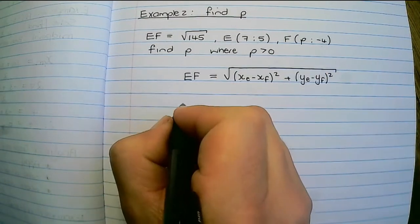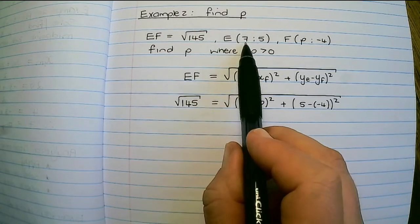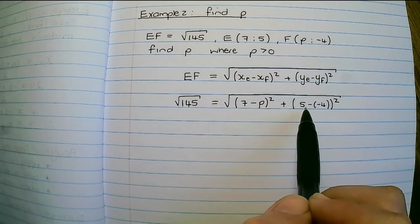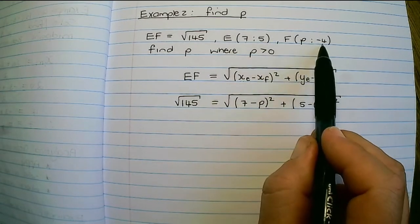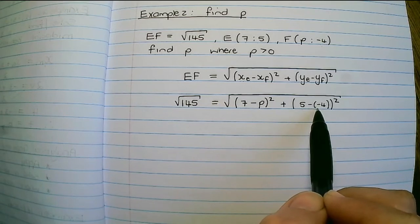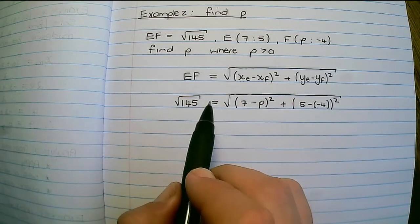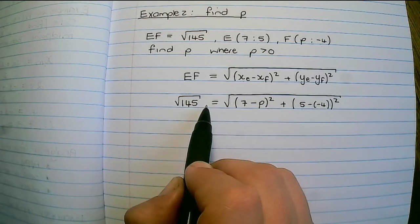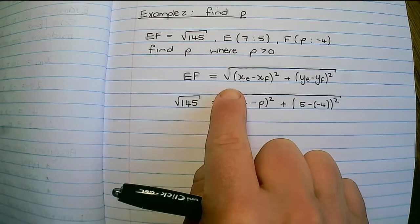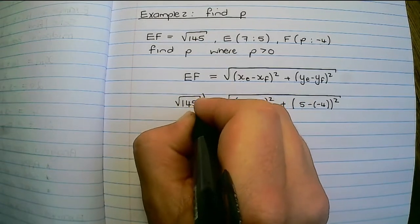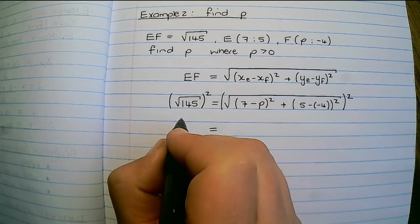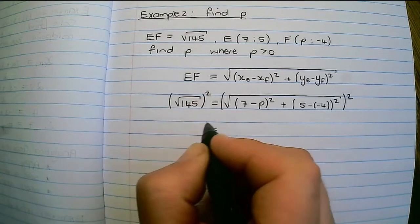Let's substitute. The x-coordinate of E is 7 minus the x-coordinate of F which is P, and the y-coordinate of E is 5 minus the y-coordinate of F which is negative 4, giving 5 minus negative 4. Because we have square roots on both sides, we can square both sides to eliminate them — squaring on the left and squaring on the right gets rid of the square roots on both sides.